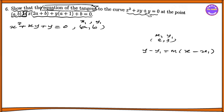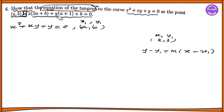The equation is x squared plus xy plus y equal to zero. We have 2a plus b plus y, a plus b plus b equal to zero.